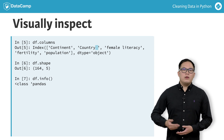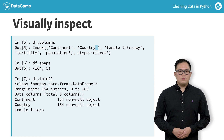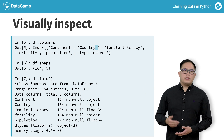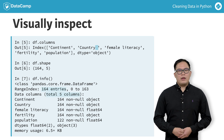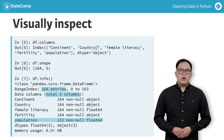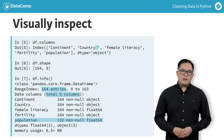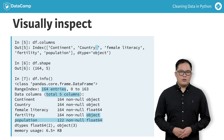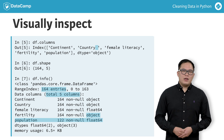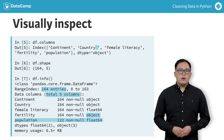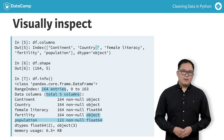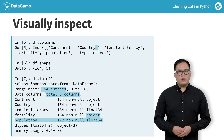We can use the info method to get additional information about our data frame. This is a pandas data frame object with 164 rows and five columns. The population column only has 122 non-missing values, so we can subtract 122 from 164 and know there are 42 missing data points. The fertility column should also contain numeric values, but it's stored as an object instead. An object type is a generic type in pandas stored as a string. Numeric data types will be represented as int if there are no decimals, and float if there are decimals.